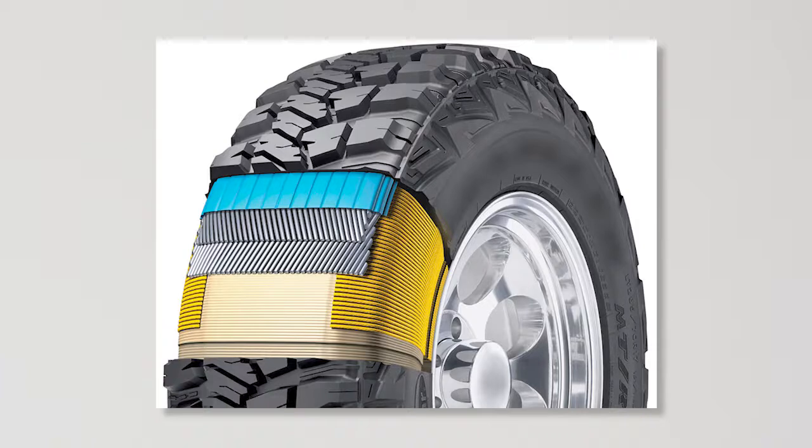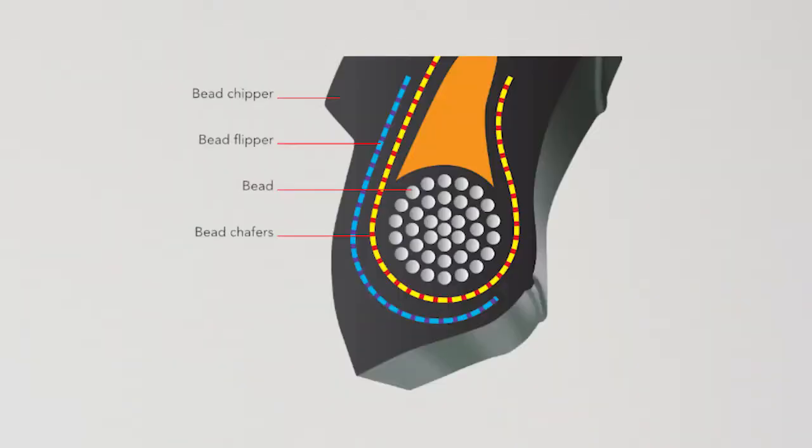Tires are designed to contain these inflation pressures using either fabric or steel body plies to reinforce the tire. These plies wrap around a bead bundle, which is a steel wire hoop holding the tire to the wheel. The bead bundle also prevents air from leaking or the tire from slipping on the wheel.